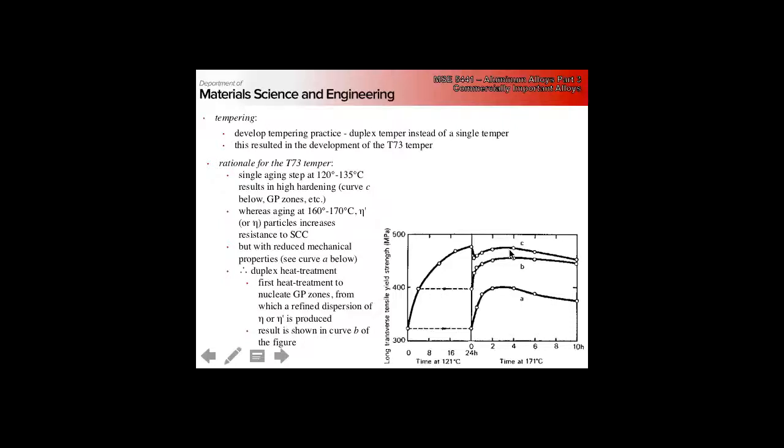Here we hold at roughly 120 C for almost a full day to nucleate GP zones, from which then we can get a refined dispersion of either the intermediate eta prime or the thermodynamically stable eta phase. This gives us a good combination of high strength plus much better resistance to stress corrosion cracking than if we just did a single age at 120.